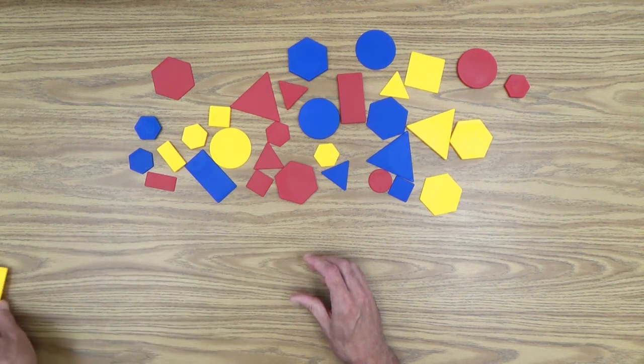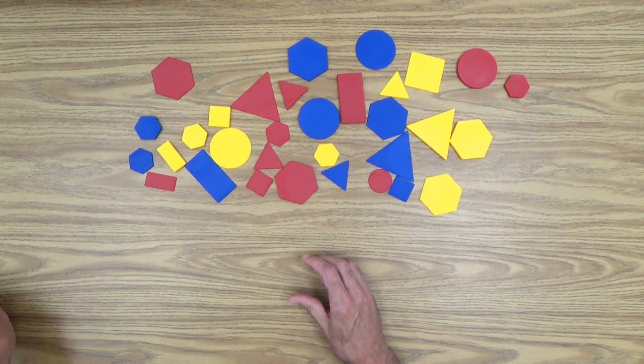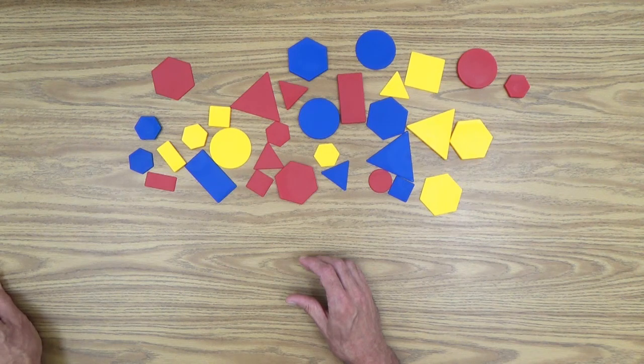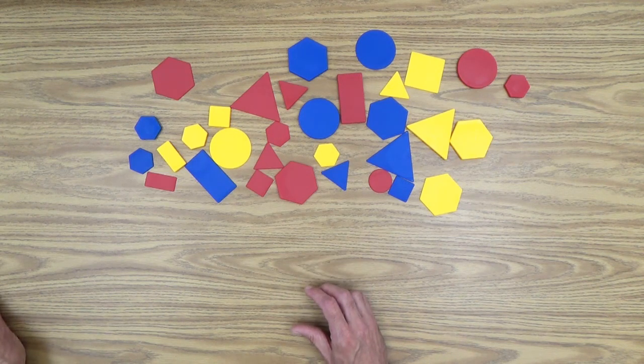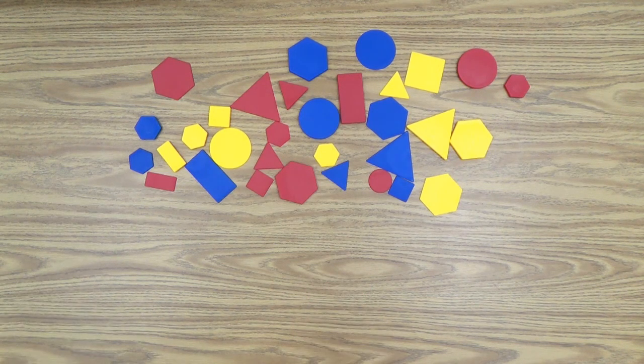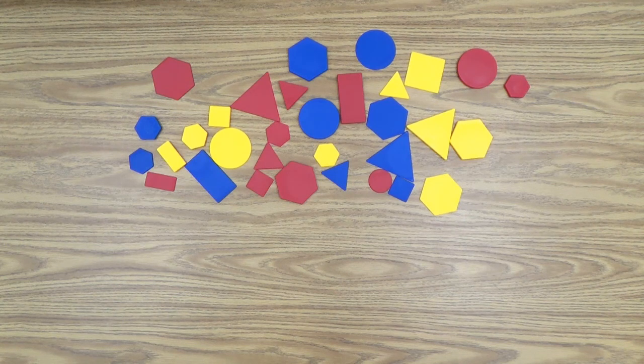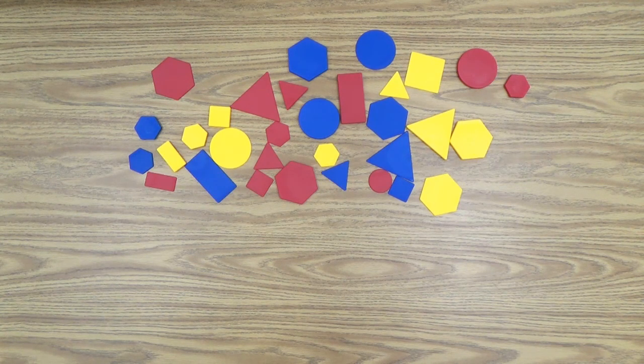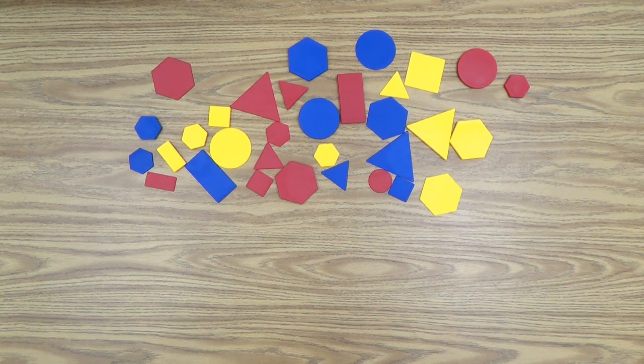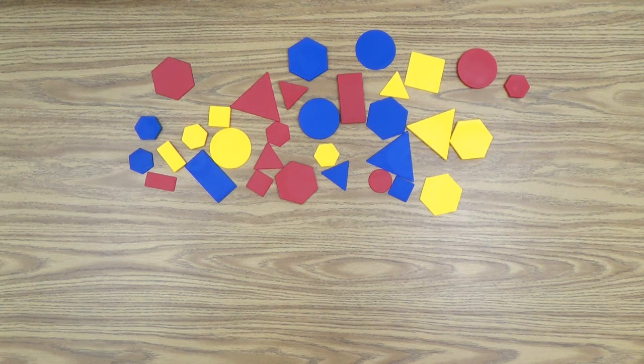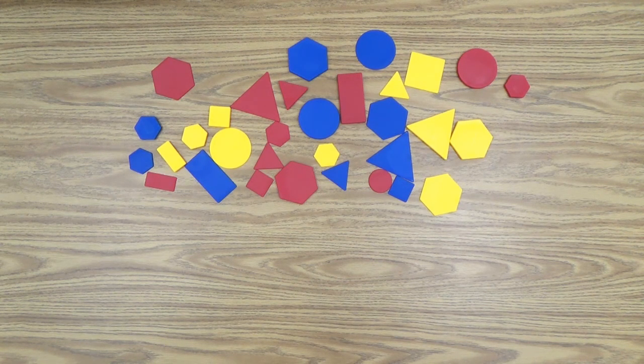So that's how you play the I see a game. And perhaps we'll do one more. Or I could say, I see a small, blue, thin square.